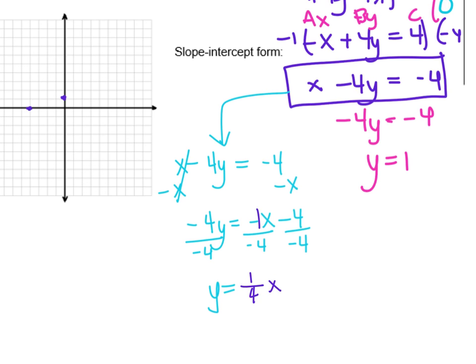We just put the x on the side. And then negative 4 divided by negative 4 right here. That's going to turn into a positive 1. And there's our slope-intercept form, where the slope is 1 fourth and the y-intercept is 1.